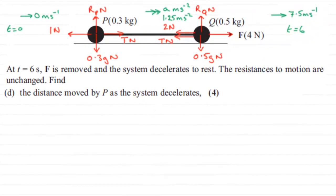Now for this next part, D, it's quite tricky. What we've got is that at time T equals 6 seconds, the force F is removed and the system decelerates to rest. The resistances to motion are unchanged and we've got to find the distance moved by P as the system decelerates for four marks.